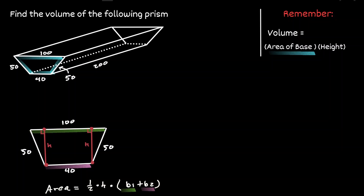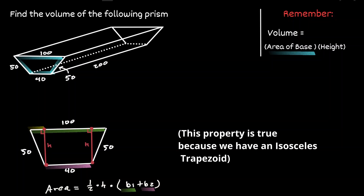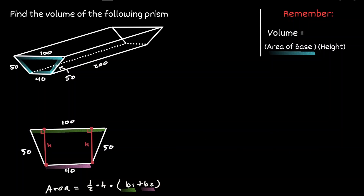This perpendicular line will be the height we're looking for. Notice that the sides of this trapezoid are congruent to each other. We know that the length of one section is congruent to the other. Since the whole top length is 100 and the bottom base is 40, the two outer sections sum to 60. Because each section is congruent, the length of each section is 30.